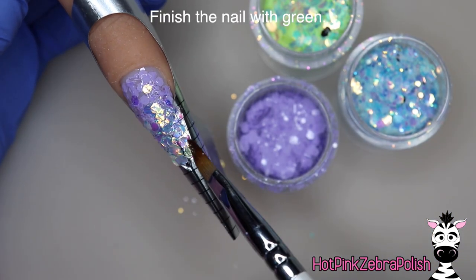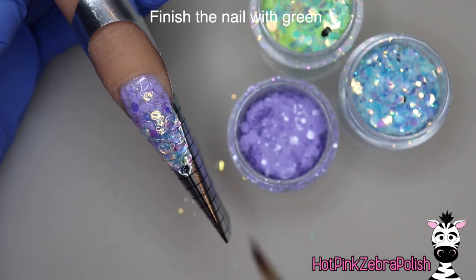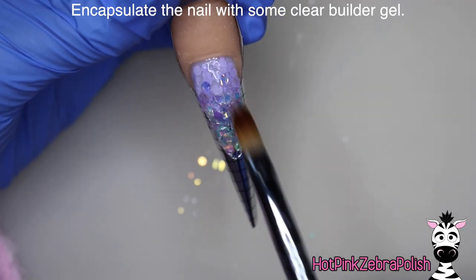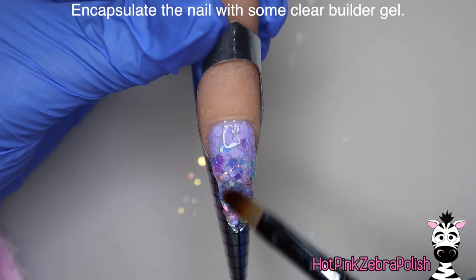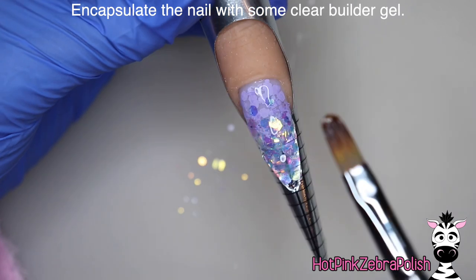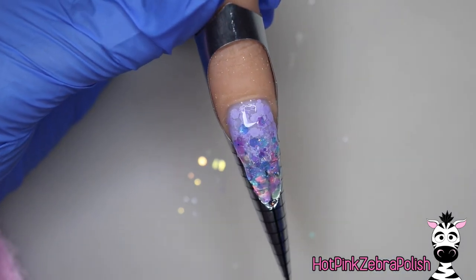But back to this nail, using a little bit of the sculpture gel dipped into a purple then an iridescent blue and then a green glitter I'm going to fill in this nail with that glitter ombre. Then after that I'm going to encapsulate it with a layer of clear builder gel just to make sure that it is really smooth and it gives this wonderful glassy effect over the glitter.